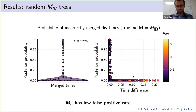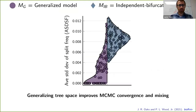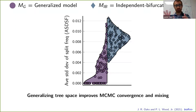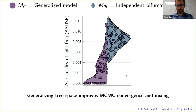One really surprising result is that the generalized approach actually improves the behavior of the computational machinery — the MCMC convergence and mixing. This was not a guarantee at all because we expanded tree space. But we also created new ways of moving through that tree space, and that seems to be more important than the overall space size. We're actually able to improve convergence and mixing of the MCMC chain, which was a very pleasant surprise.